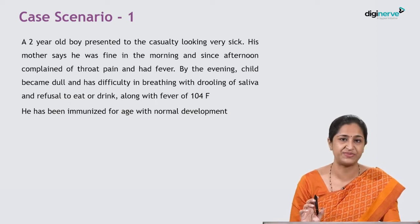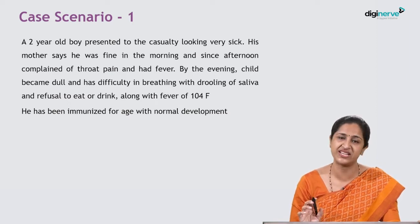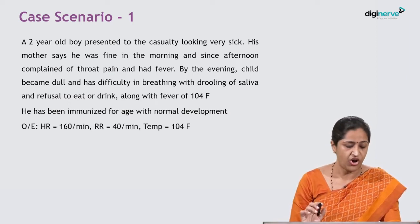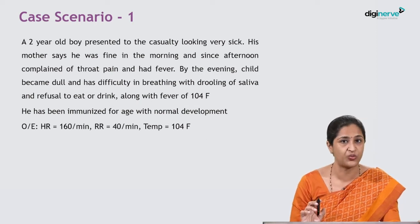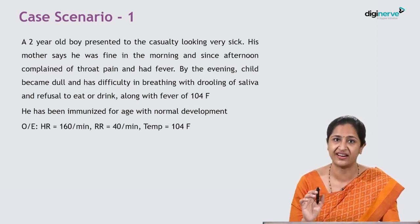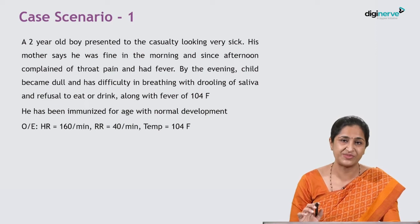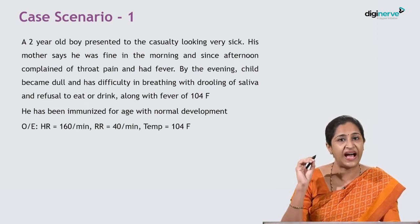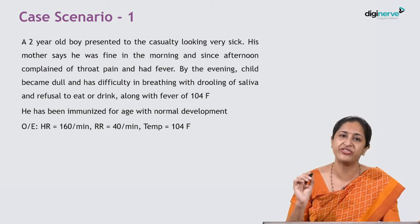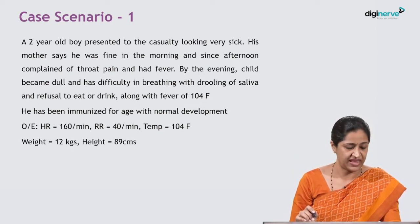Other relevant history is that the child has been immunized for age and his development is normal. On examination, he has a heart rate of 160 — note there is tachycardia. Respiratory rate is 40 per minute, which for a two-year-old is on the upper limit of normal. Temperature is 104 degrees Fahrenheit. Weight is 12 kg, height 89 cm. He has no pallor, icterus, cyanosis, clubbing, lymphadenopathy or edema.